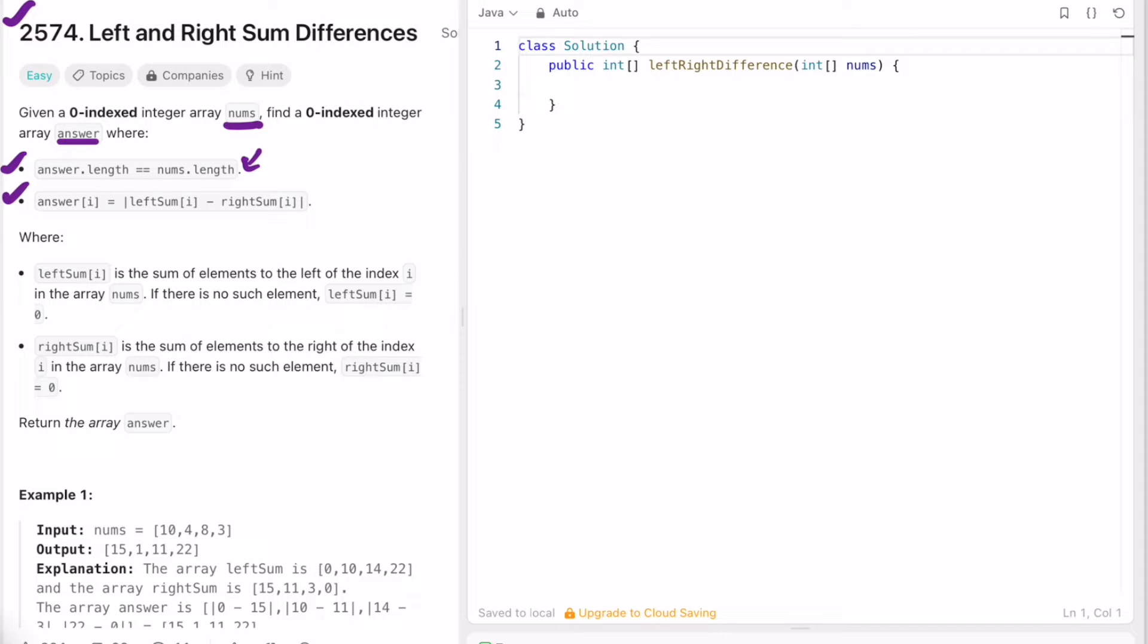The first criteria is that the length of the input array and output array should be the same, and each element inside the output array should be the absolute difference between the left sum and the right sum of that particular element. Left sum is defined by the sum of all elements to the left of that index. If there is no element to the left, we return zero for that left sum.